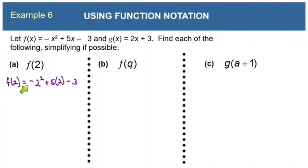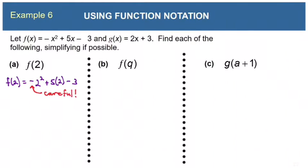Be very careful here, because we're squaring this 2 but the negative is not in parentheses, so the negative is not affected by the exponent. We do 2 squared equals 4 and then attach the negative in front. That gives us negative 4 plus 5 times 2, which is 10, minus 3. Then negative 4 plus 10 is 6, and 6 minus 3 is 3. So f of 2 equals 3.